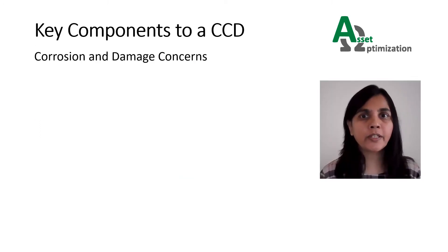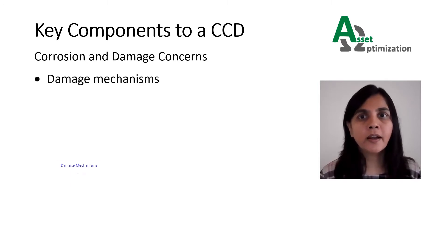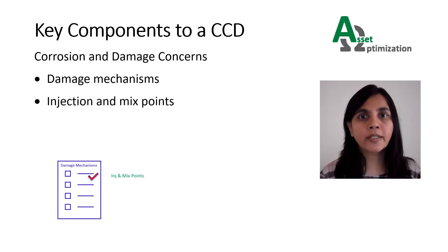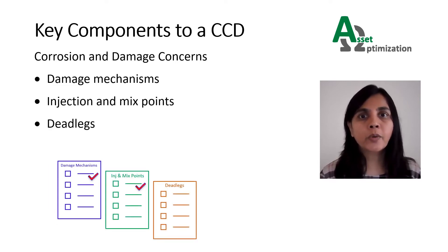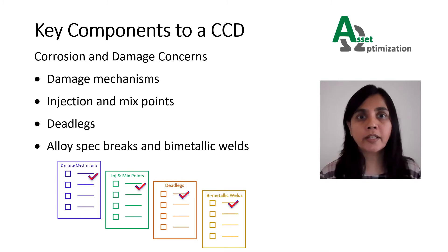The second category of key components to a CCD includes information on corrosion and damage concerns. This consists of information regarding damage mechanisms, along with listings of injection and mix points, dead legs that require special monitoring, and alloy spec breaks or bimetallic welds that require special monitoring. The robustness of a CCD depends on the complexity of the process unit, as well as the risk associated with the process, and it's up to the plant owner-user to determine the level of detail to include within their CCDs.